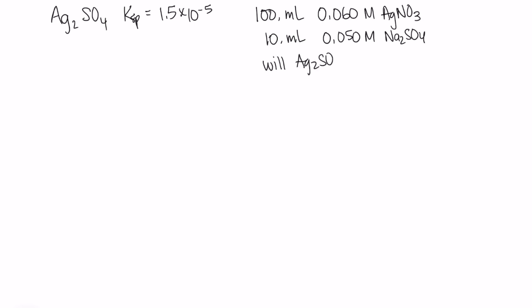So we're given some information about silver sulfate. The Ksp for silver sulfate is 1.5 times 10 to the minus 5. And we're asked if we mix 100 milliliters of 0.06 molar AgNO3 with 10 milliliters of 0.05 molar Na2SO4, will Ag2SO4 precipitate form.